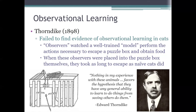John Watson came to the same conclusion after he failed to find evidence of observational learning in monkeys. Those are two pretty big names in the history of learning research — Edward Thorndike and John Watson — and they both took the position that observational learning simply does not occur in non-human animals. But today we know they were wrong, because many studies since their time have provided strong evidence that animals can, in fact, learn through observation.